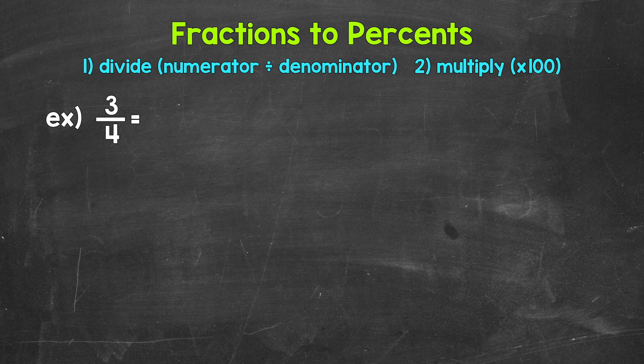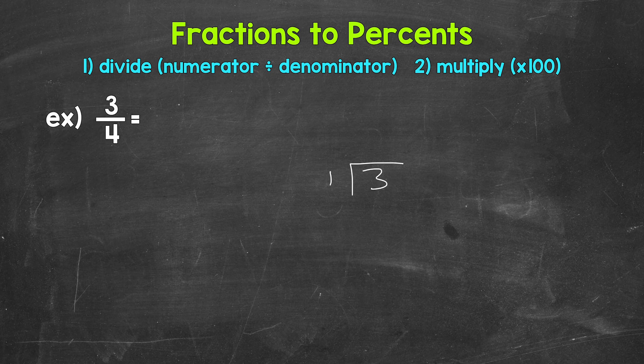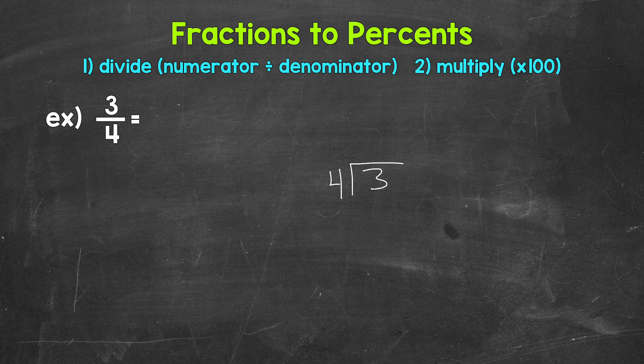So we need to start by converting this to a decimal by dividing. So for 3 fourths, we can set this up as 3 divided by 4. And now we can go through the division process.